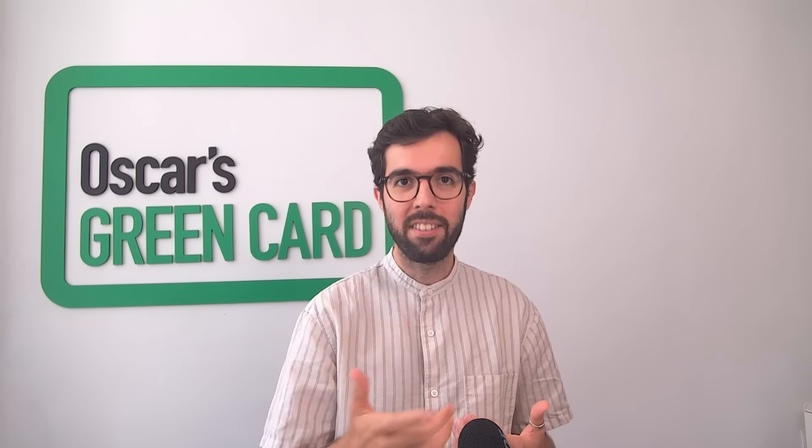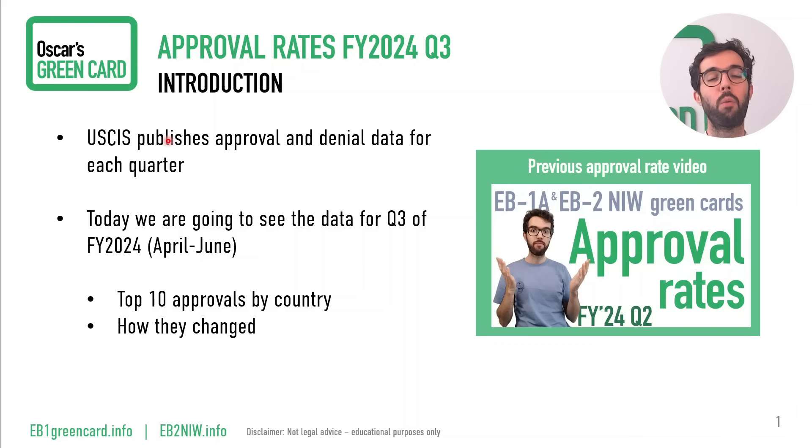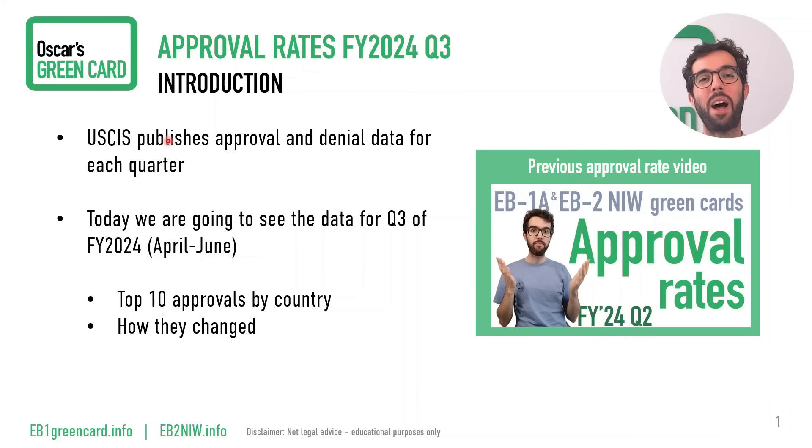Let's start with today's topic: approval rates for quarter three. This comes from USCIS approvals — we do this every quarter. We take all that data from USCIS and come here and report it to you. We also provide a link so you can actually go and do all of this by yourself if you don't want to trust the way we do it.